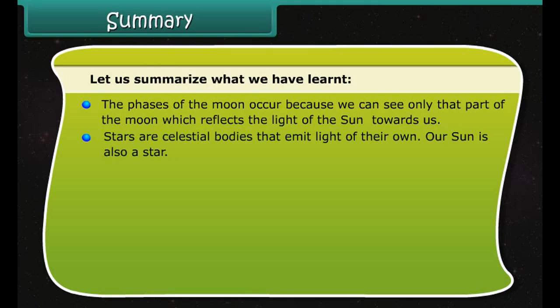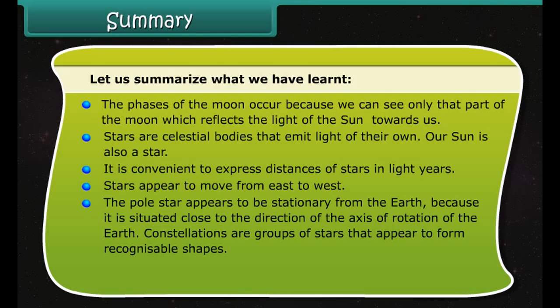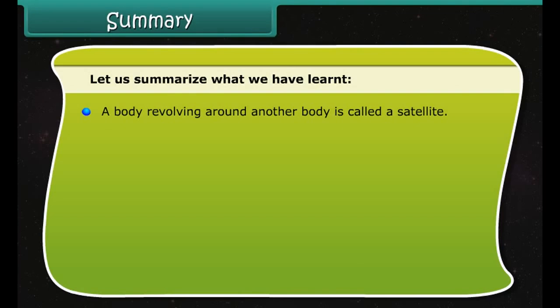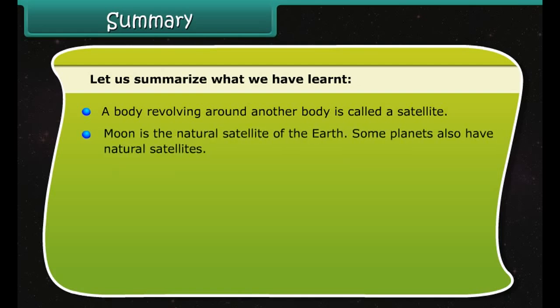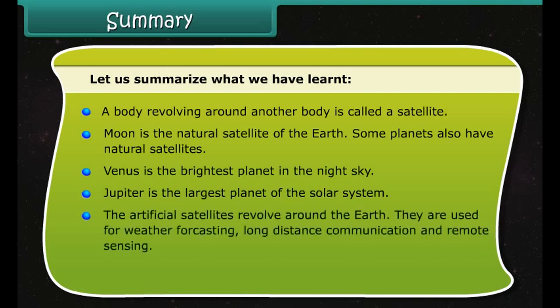Jupiter is the fifth planet from the Sun and the biggest planet of the solar system. It is the first of the gaseous planets, made up mainly of hydrogen and helium, and appears as a very colorful object when seen through a telescope. Jupiter has some thin rings around it. Its atmosphere consists of hydrogen, helium, methane, and ammonia, and its surface temperatures are around minus 150 degrees Celsius. Jupiter's mass is more than 3,000 times the mass of Earth, giving it a very strong gravitational pull that can deflect comets from their original paths.